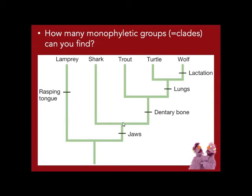Trout, turtle, and wolf is another monophyletic group. And you could have everybody — the whole tree — lamprey, shark, trout, turtle, wolf — as a monophyletic group.